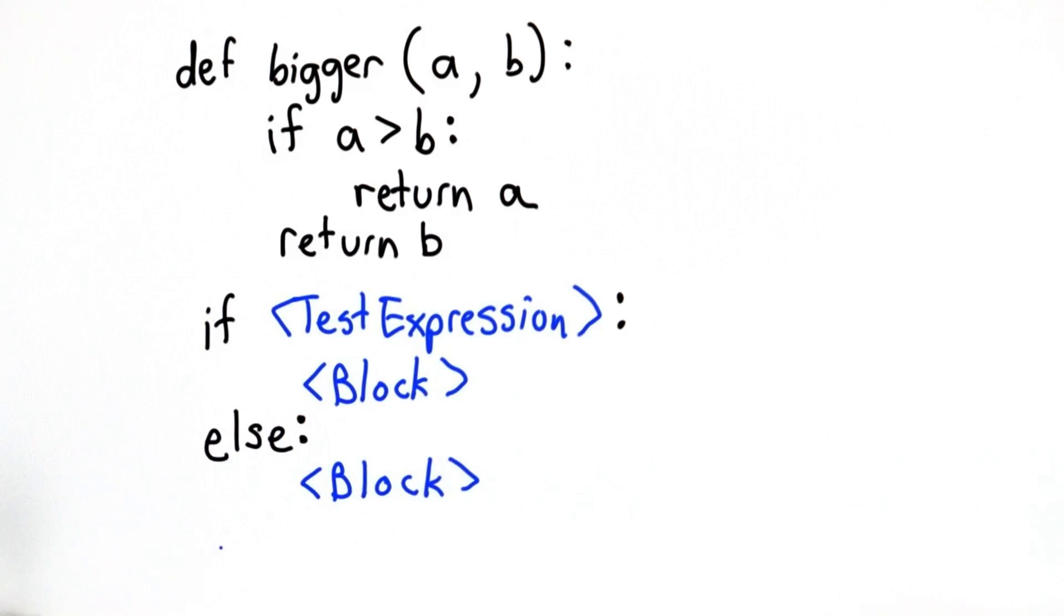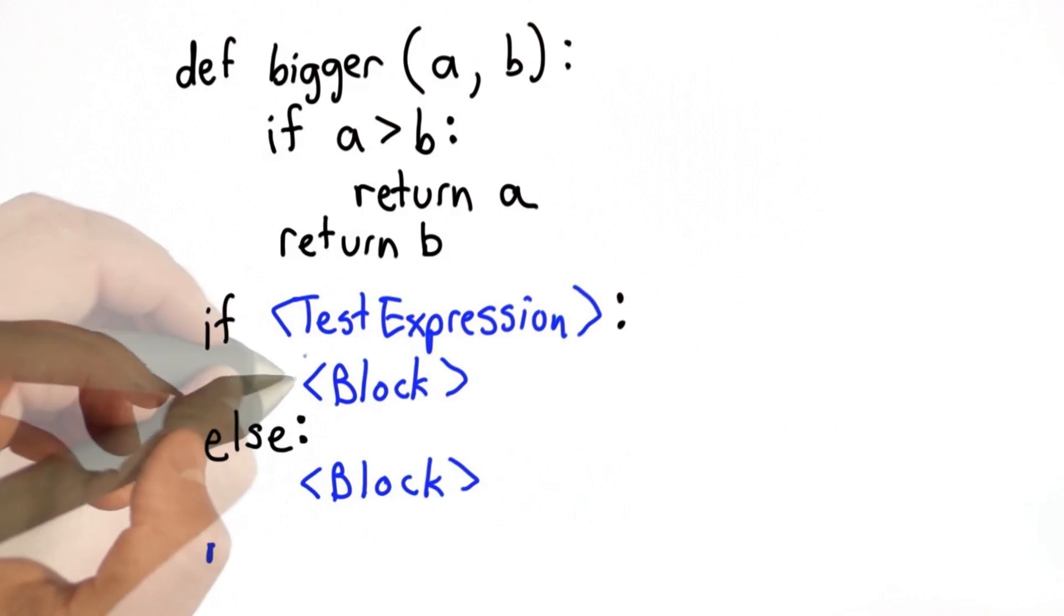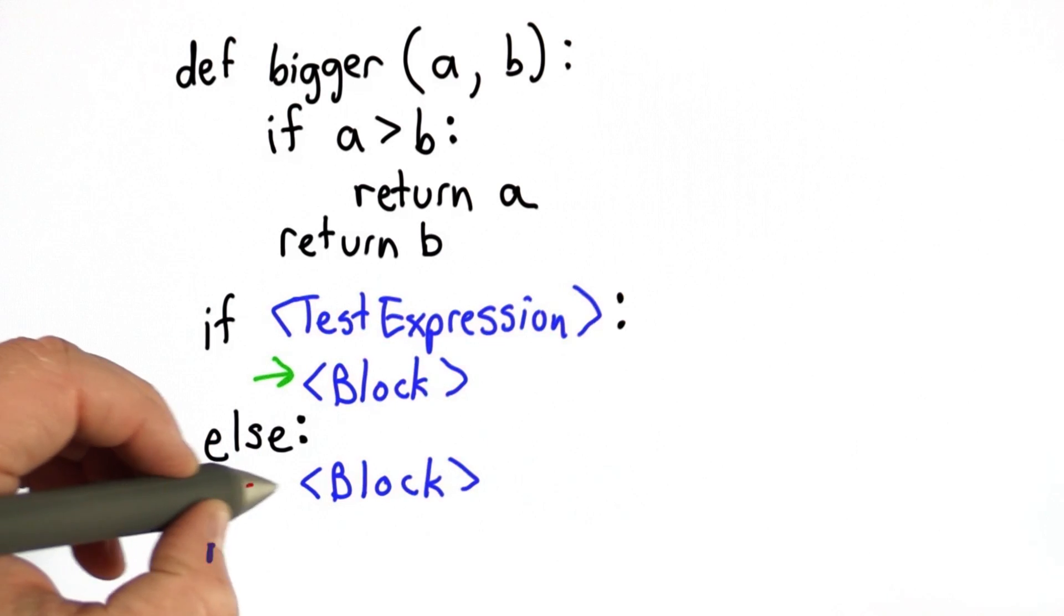As before, the indentation tells us when we're done with the block. So after the else, whatever code is here, we'll execute whether the test expression is true or false. The test expression determines whether we execute the block inside the if or the block inside the else.